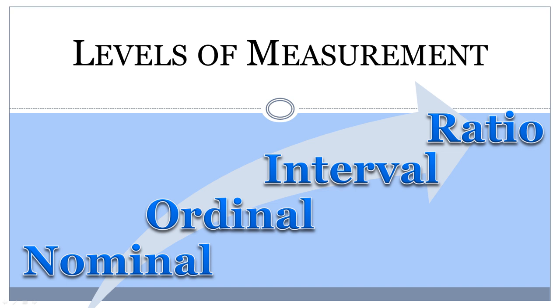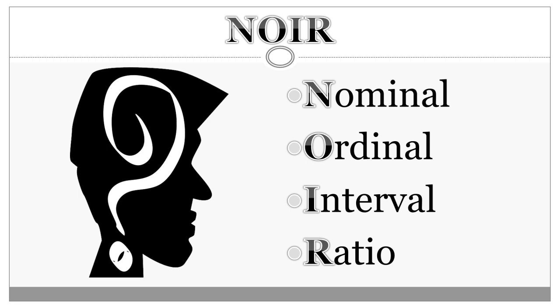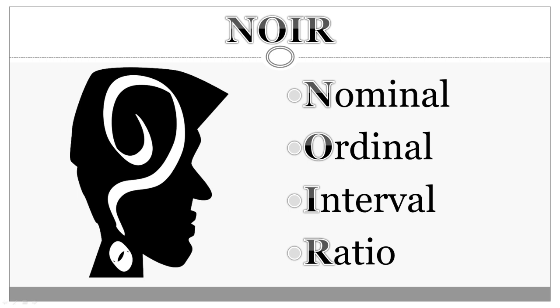You will also be familiar with types of tests that can be done with each level. To remember these levels of measurement in order, use the acronym NOIR. The level of measurement of a variable depends on the nature of that variable as well as how the researcher collects the data.